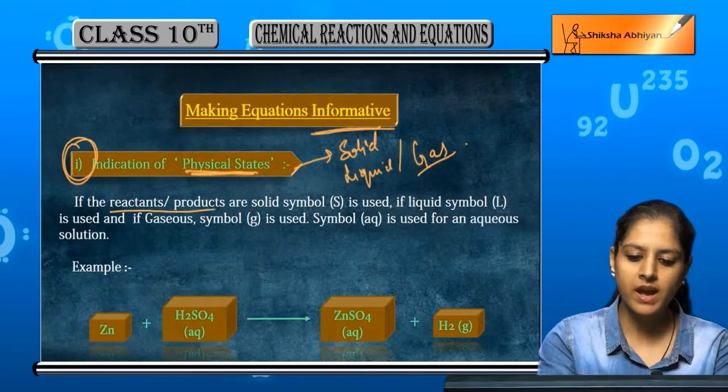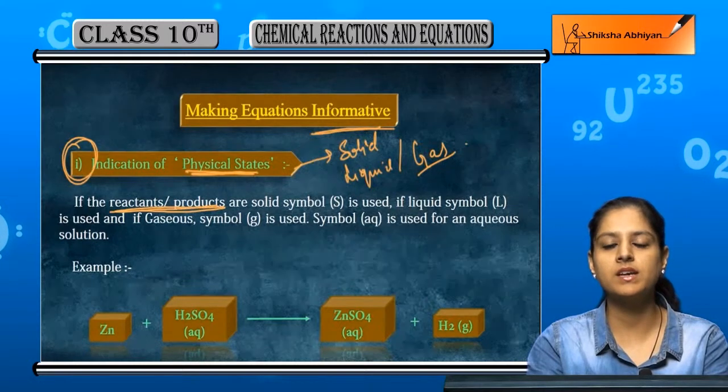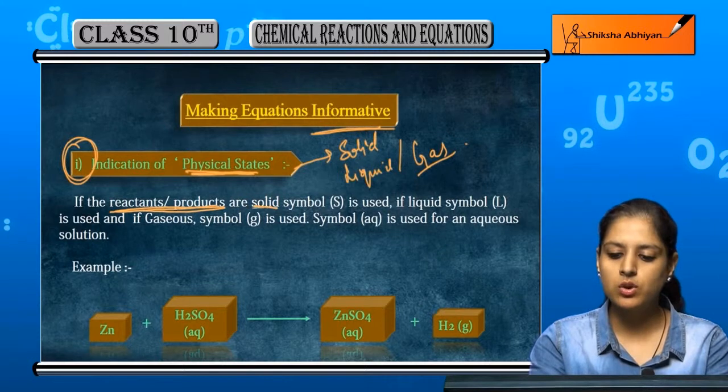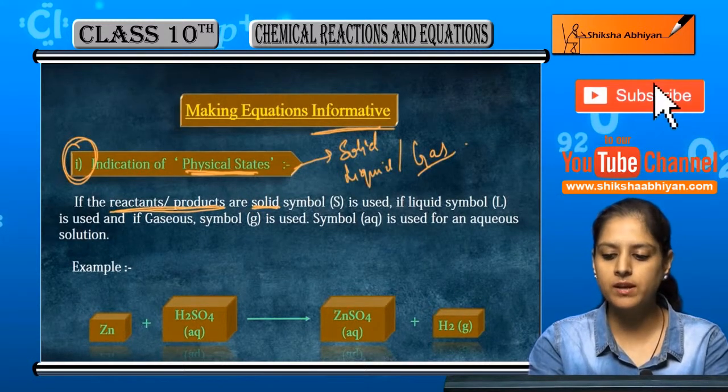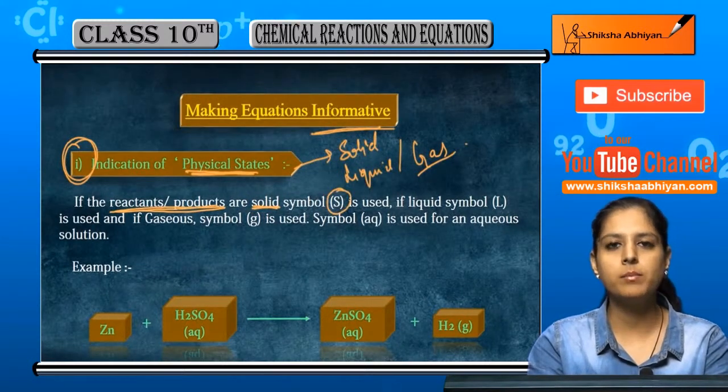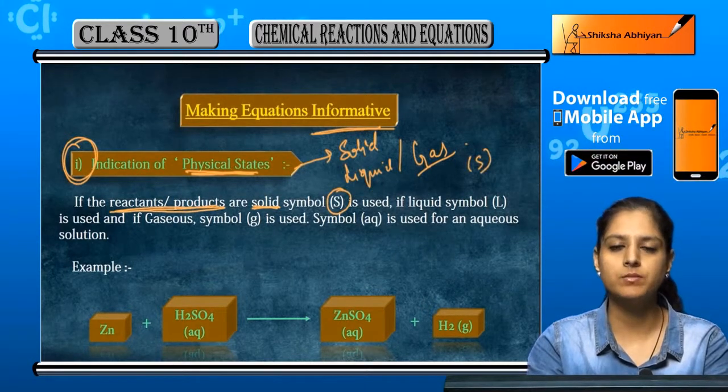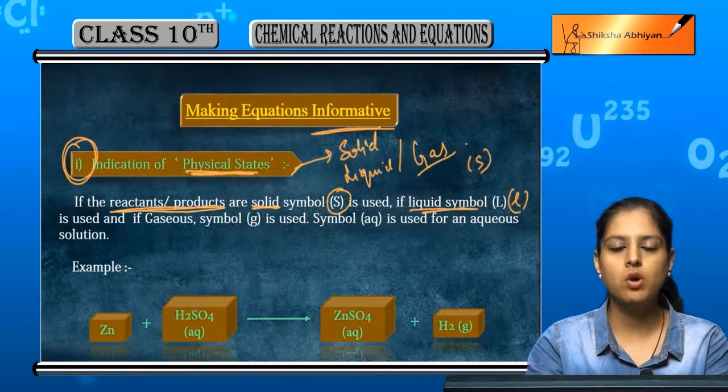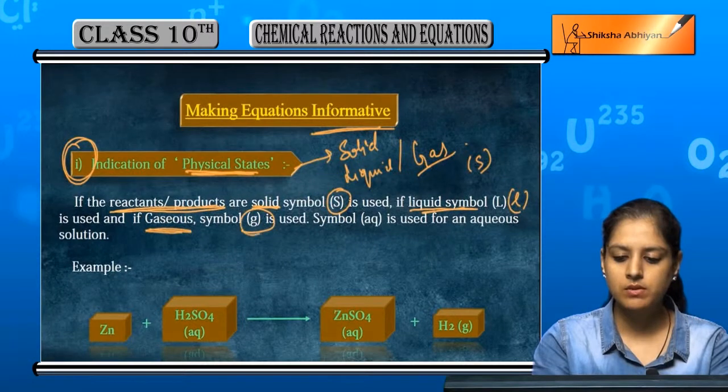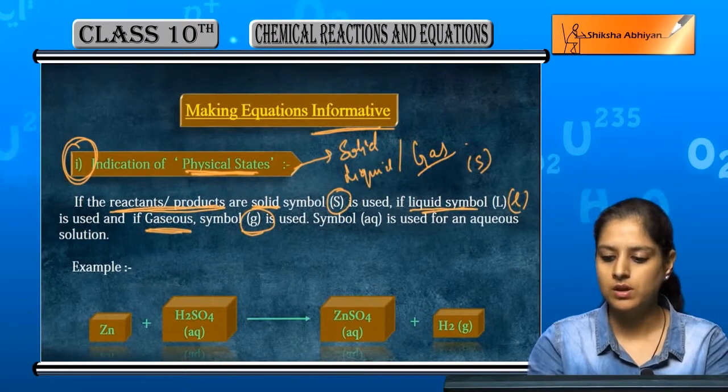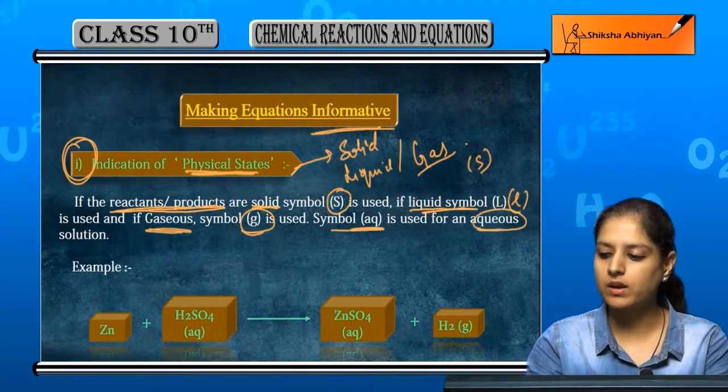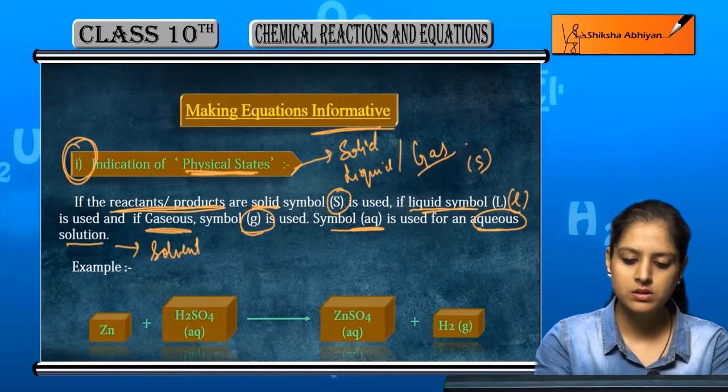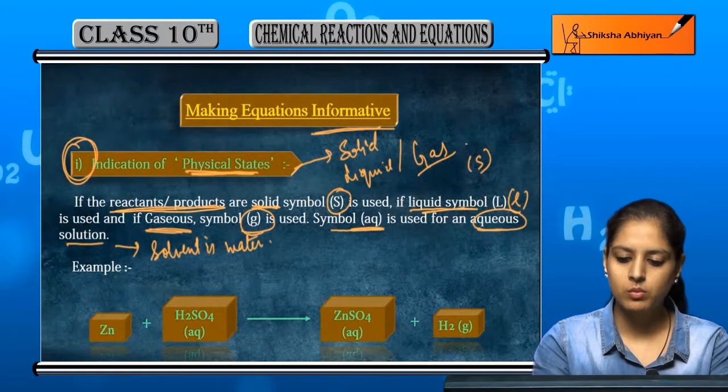First of all, if we look at reactants and products, we are showing that they are solid, liquid, or gas. So we will use symbols. If any reactant or product is solid, we will use small s enclosed in brackets. If it is liquid, we will use small l. And if it is gaseous, we will use small g. And aqueous will be used for an aqueous solution. Aqueous solution means where solvent is water.